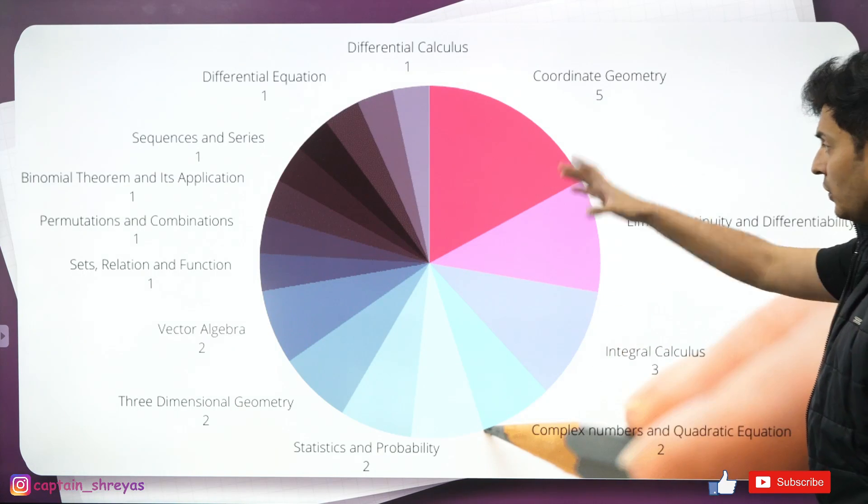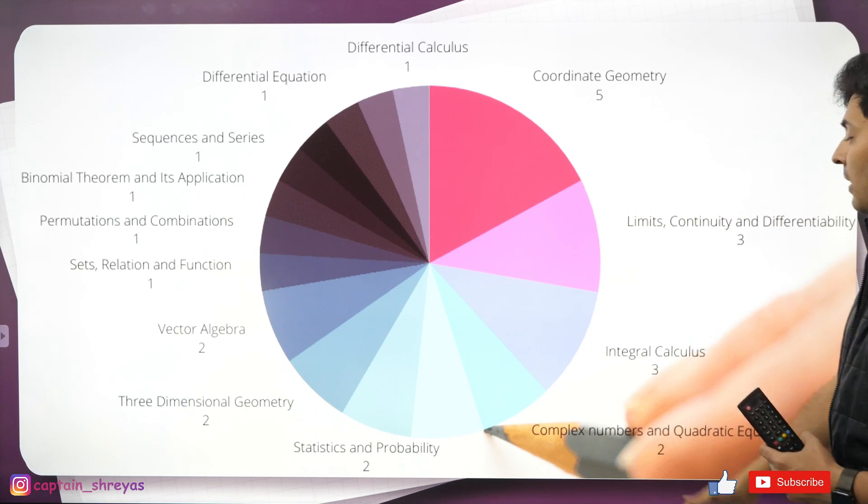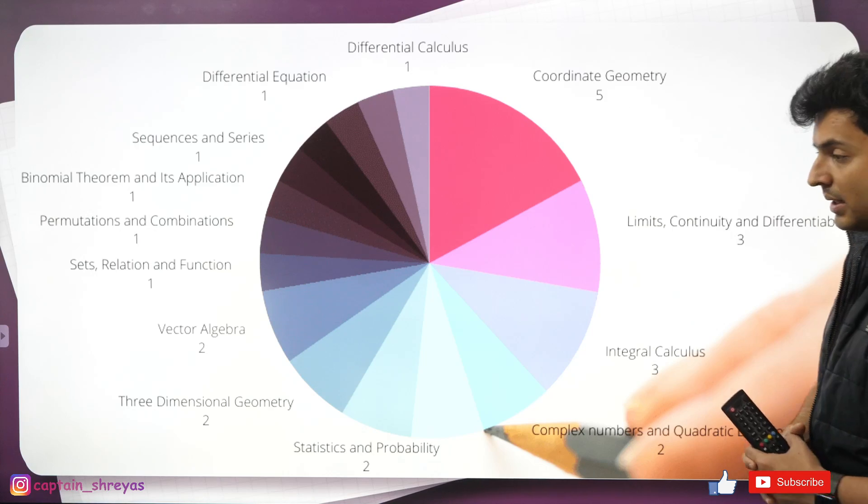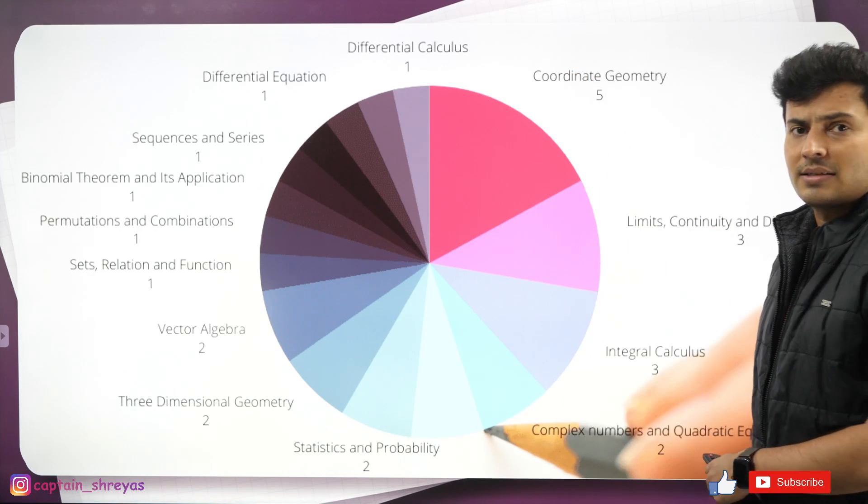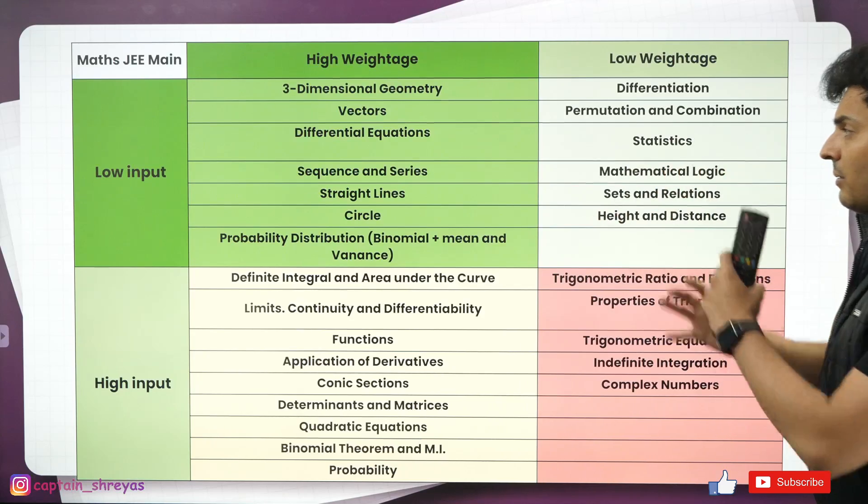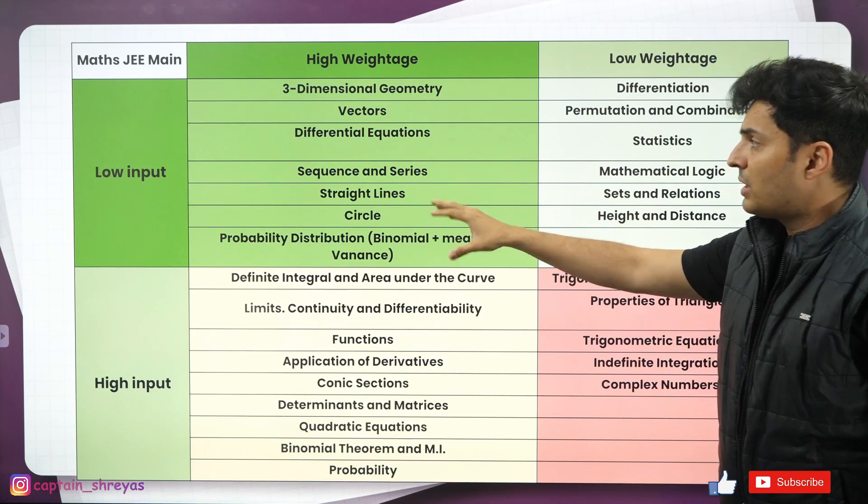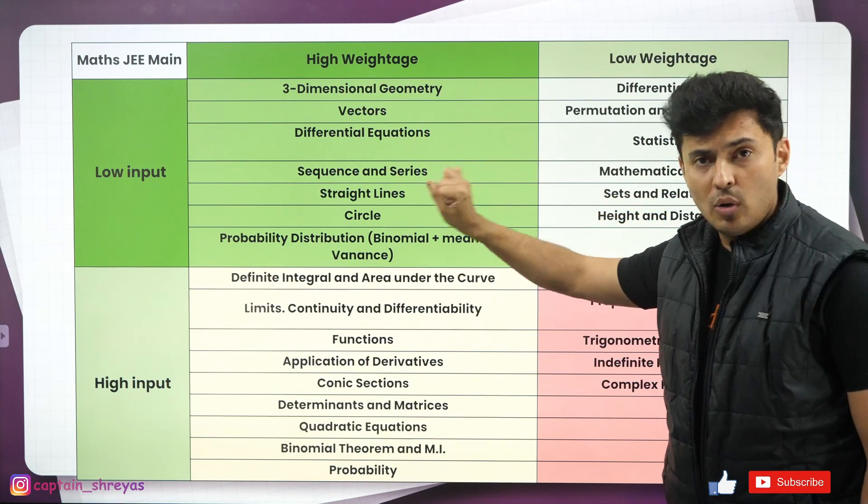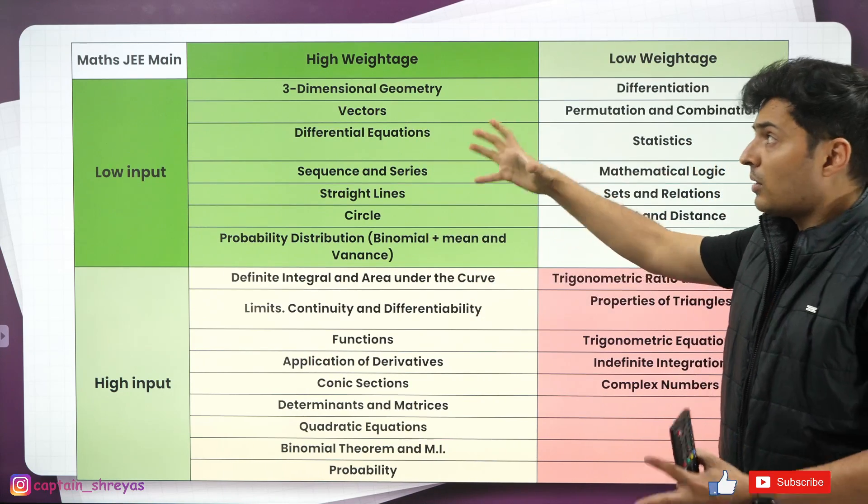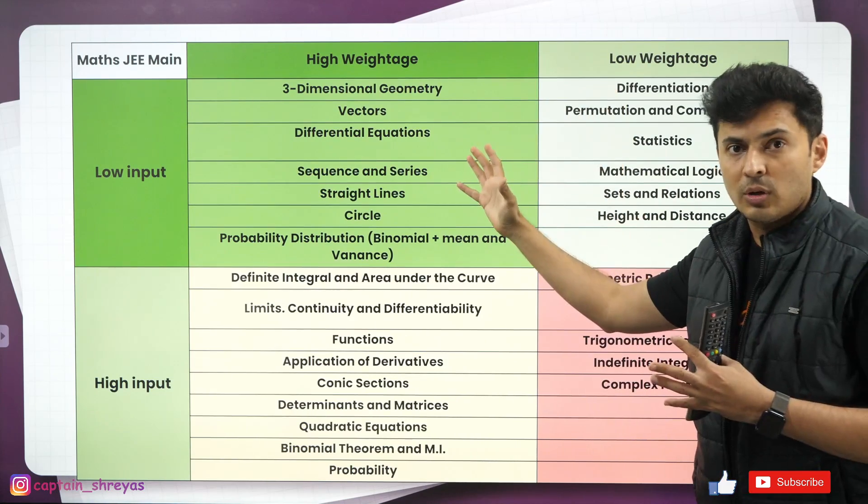Similarly in maths, if you see the weightage, coordinate geometry, limits, continuity, differentiability, integral calculus, complex numbers and quadratic equations, these are heavyweights in your JE Mains maths. But when you divide them into four categories, you will see topics like three-dimension vectors, differential equations, sequence and series, straight line, circle, probability distribution. They require low input and they also give you high weightage. So you must, must do these topics.